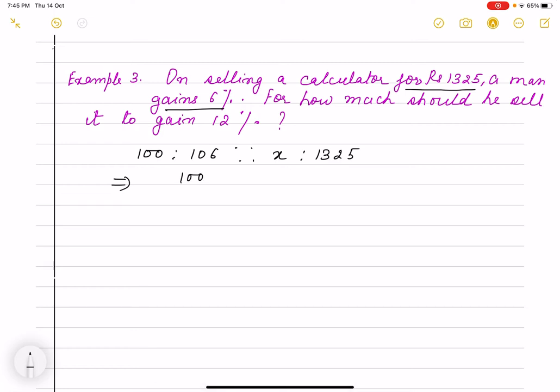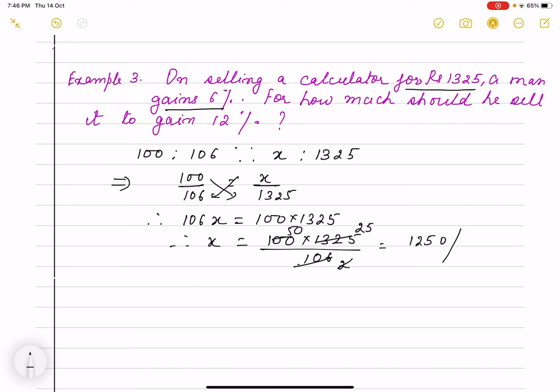CP is 100 by 106, that is the calculator's price I want to find out. Cross multiply again. 106X is 100 into 1325, so X will be 100 into 1325 by 106. It is 1250 rupees.